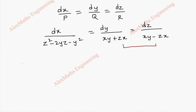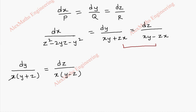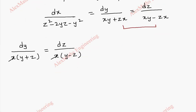Taking the last two terms: dy by x(y plus z) equals dz by x(y minus z). We can cancel the x terms and cross-multiply. So dy gets multiplied with (y minus z), giving y dy minus z dy, and on the other side we get y dz plus z dz.